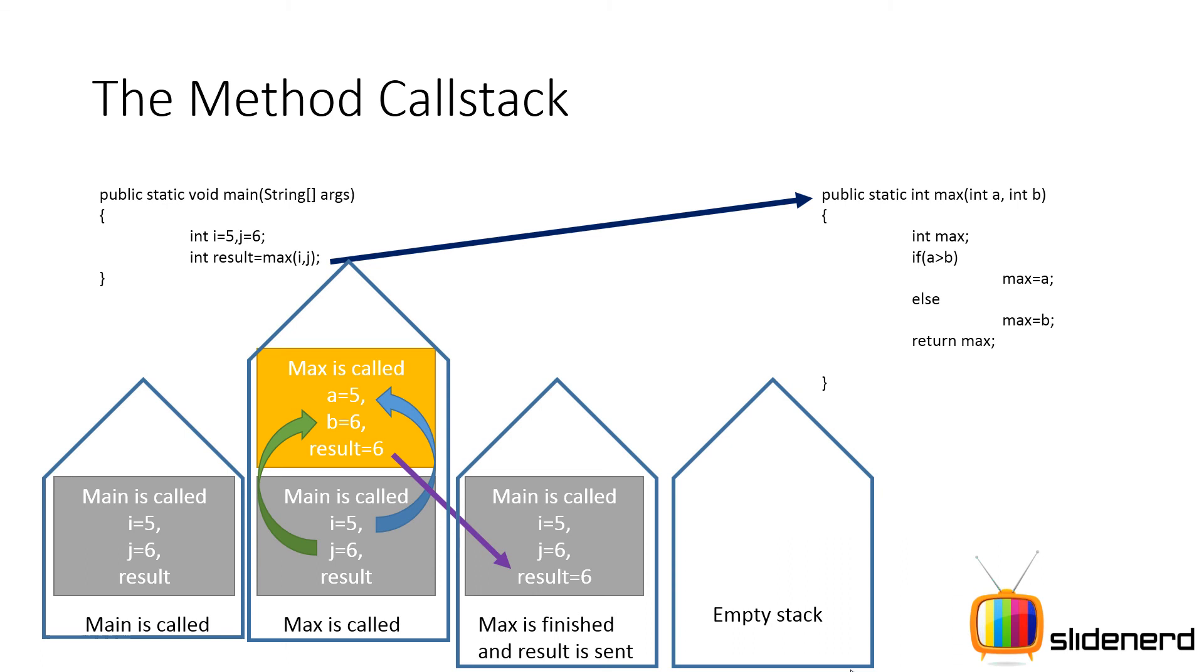So this is known as a method call stack. In other words, whatever method you call is currently at the top, and all the other methods below get in the order in which they are called. Like for example, there was main at the bottom, then there was max which was at the top. Now if you called some other method below max, then that would come to the top and so on.